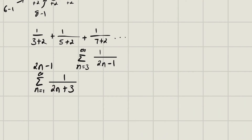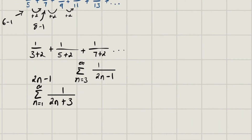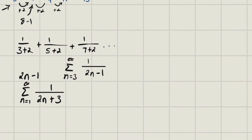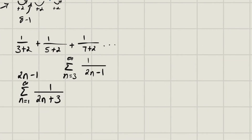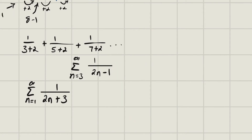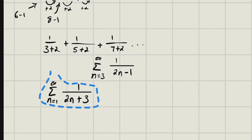Just to verify: if we plug in n=2, we get 2(2)+3 = 7, and if we plug in n=3, we get 2(3)+3 = 9. So we're producing the correct values. We'll go ahead and do it for both formulations just to show they're the same.